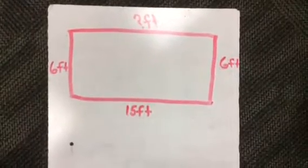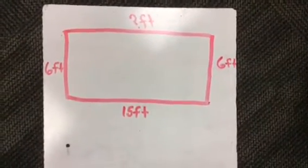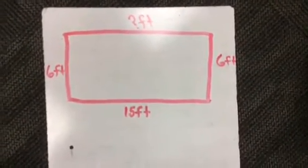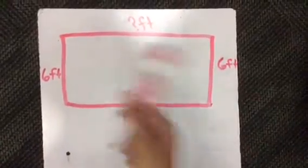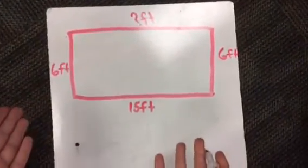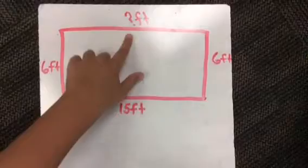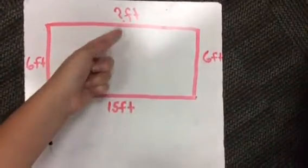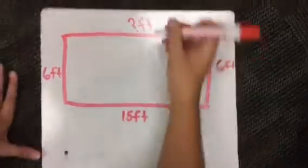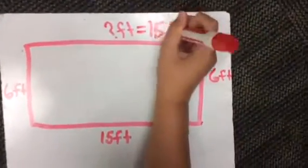So today we are going to work on perimeter of a piecewise rectangular figure. It sounds complicated but it's just finding the missing length and then adding all the sides. So let's get started. So we know how to find the sides. So we have 15 here and then we have 6 and 6. So what's across from 15? It would be 15 feet.